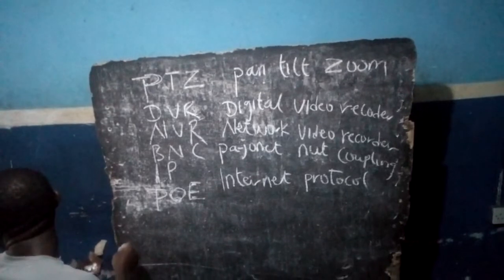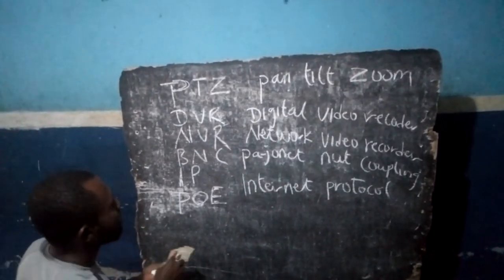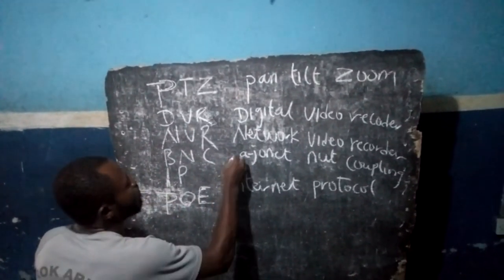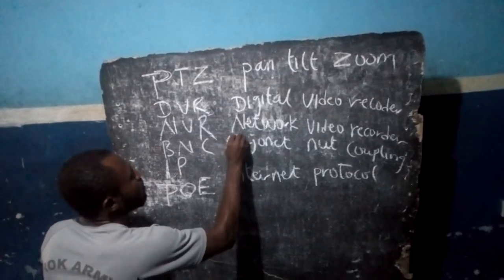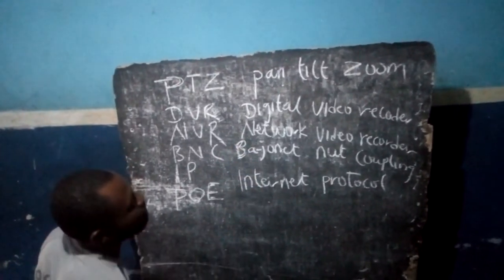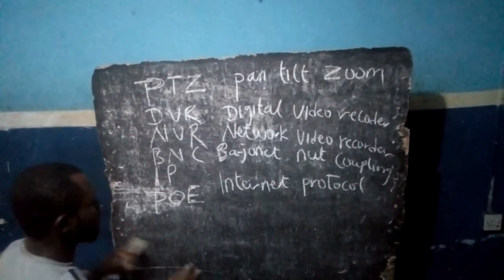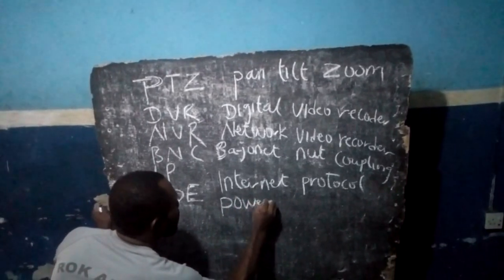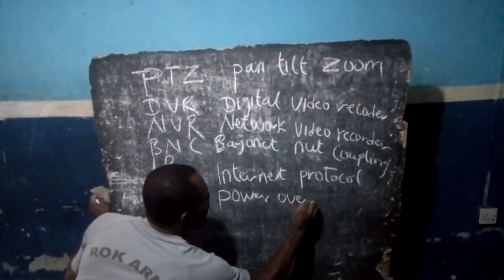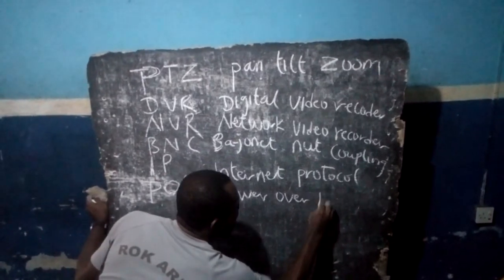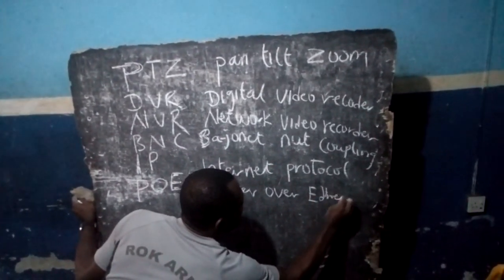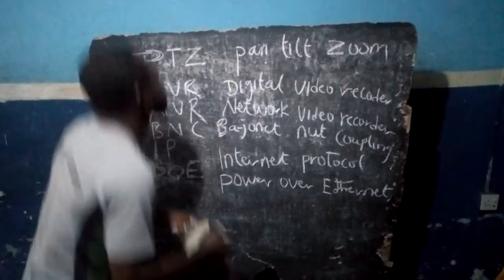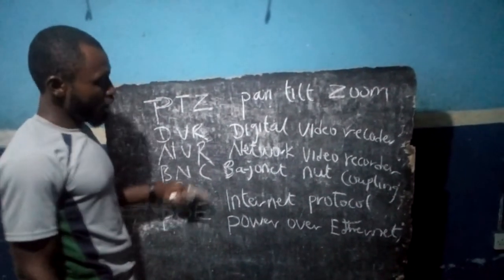Then we come to PoE. The BNC stands for Bayonet — this is bayonet. And the last one is PoE, which means Power over Ethernet. So these are the short forms of words you will find in CCTV installation.